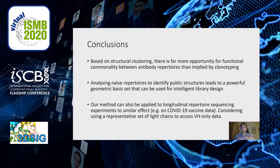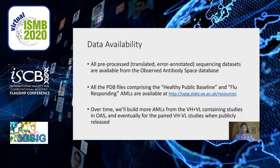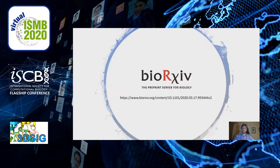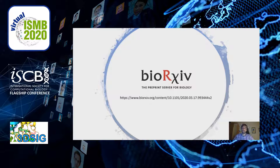Future work includes identifying a set of representative light chains, giving us access to the large amount of VH-only sequencing data we currently cannot harness since we only consider samples with both heavy and light chains simultaneously. All pre-processed datasets are available from the Observed Antibody Space database, and all PDB files comprising the two AMLs — the public baseline and the flu-responding AML — are available from our website. We intend to build more AMLs from all sequencing studies performed in OAS. A pre-print is available on the BioRxiv server. I would like to thank my co-authors, my DPhil funders, and all members of OPIG for their continued support. Thank you very much for listening — I'm happy to take any questions.